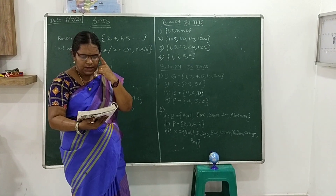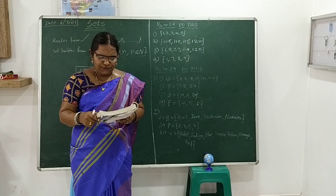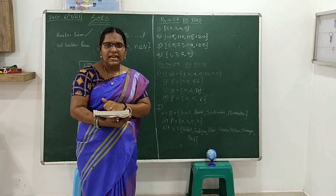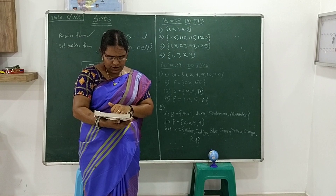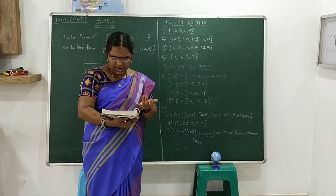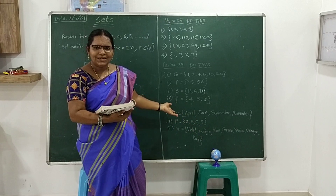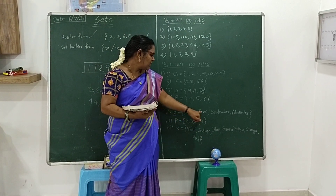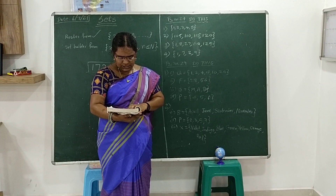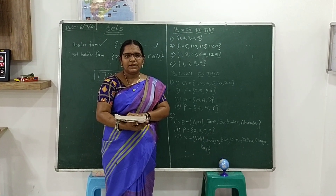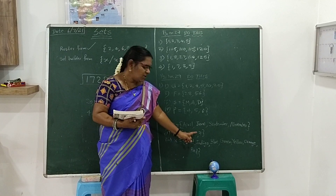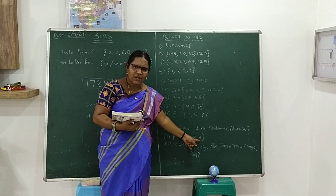Second part of page 29 Do This: write the following sets in roster form. First: B is the set of all months in a year having 30 days. The months which have only 30 days are April, June, September and November. Next: P is the set of all prime numbers smaller than 10. Prime numbers start with 2: 2, 3, 5, 7 — all less than 10.